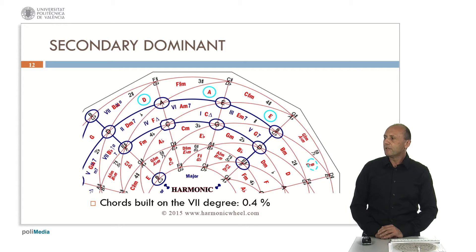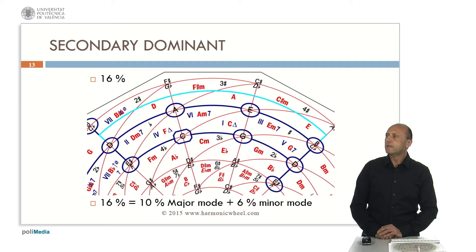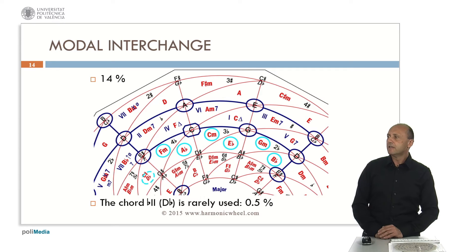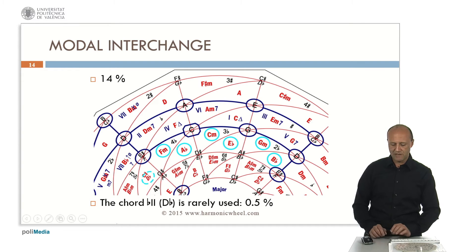Here we have represented the secondary dominants in C major. On the harmonic wheel, we can see that they are placed just above the big rectangle. 16% of pop and rock songs are composed by using diatonic plus secondary dominant chords, of which 10% are in major mode and 6% in a minor mode. If we are in C major, the modal interchange chords are those belonging to its parallel mode, that is, C natural minor. Those chords are placed just below the big rectangle on the harmonic wheel. The chord D flat major is rarely used, only 0.5% of times.